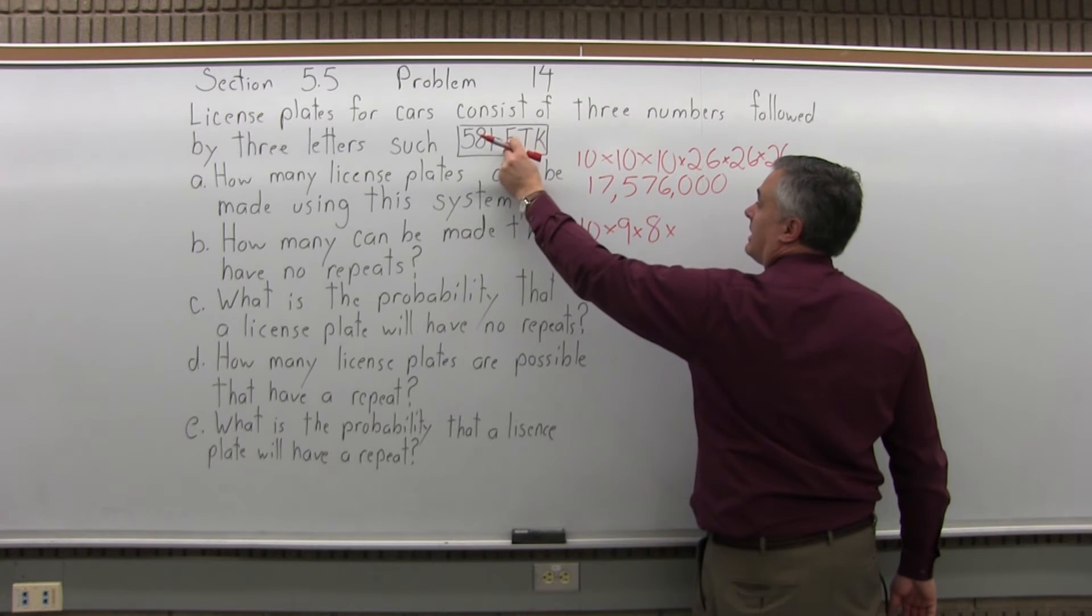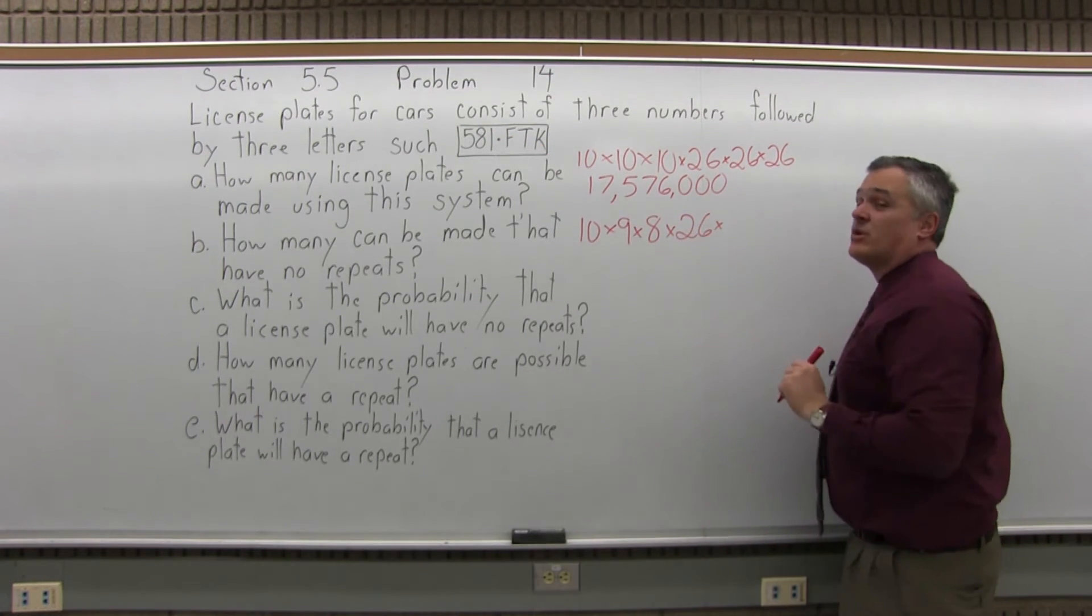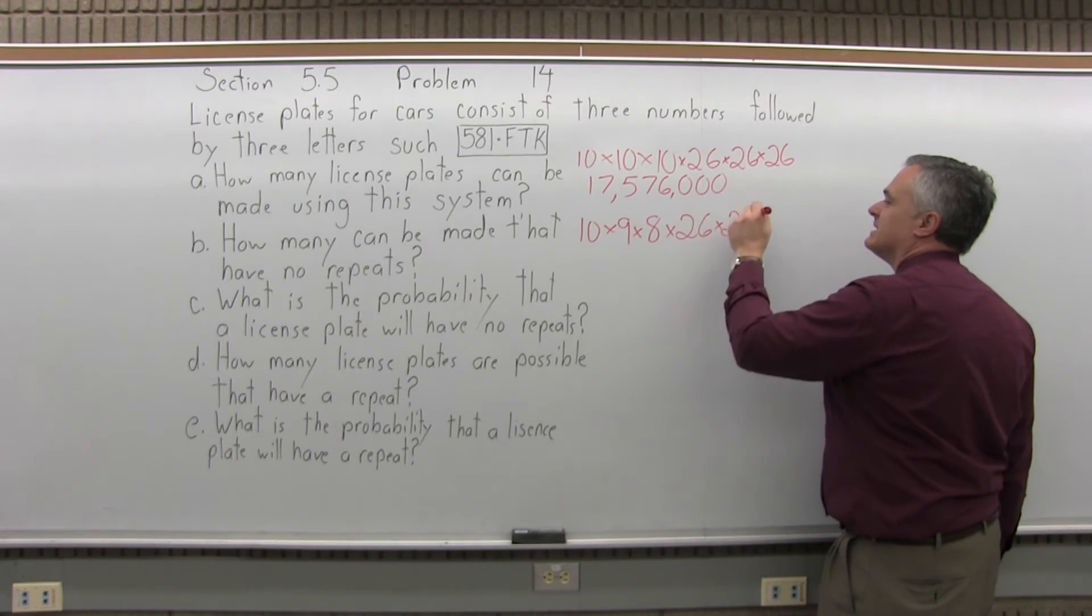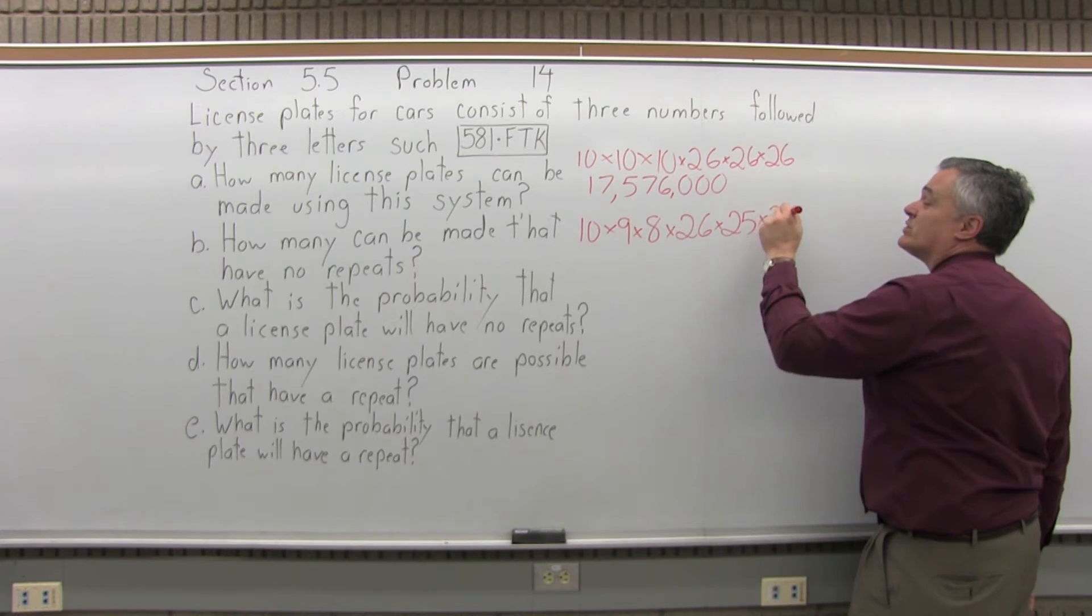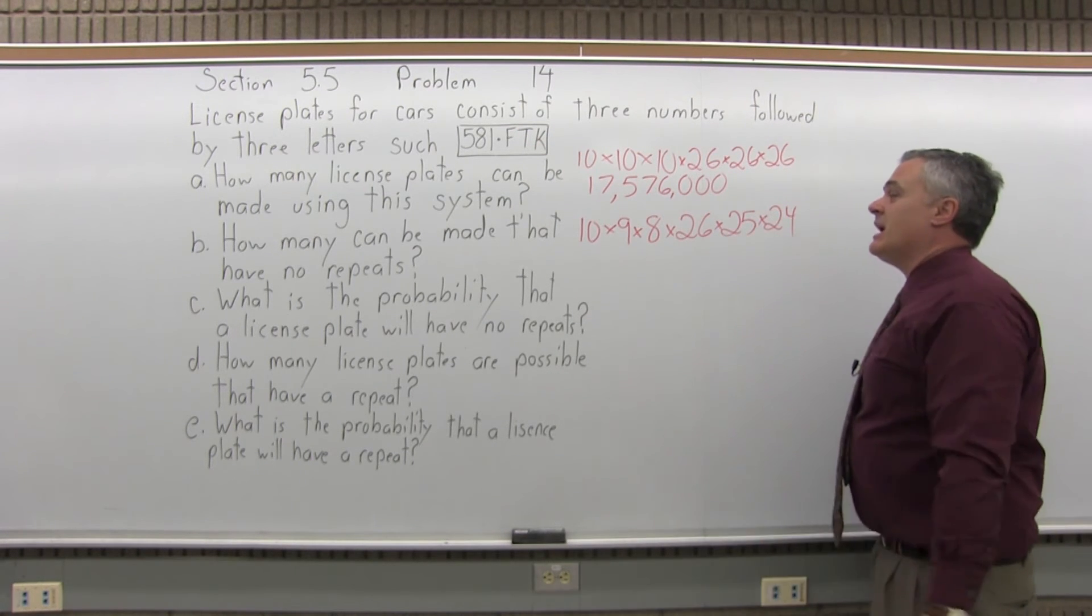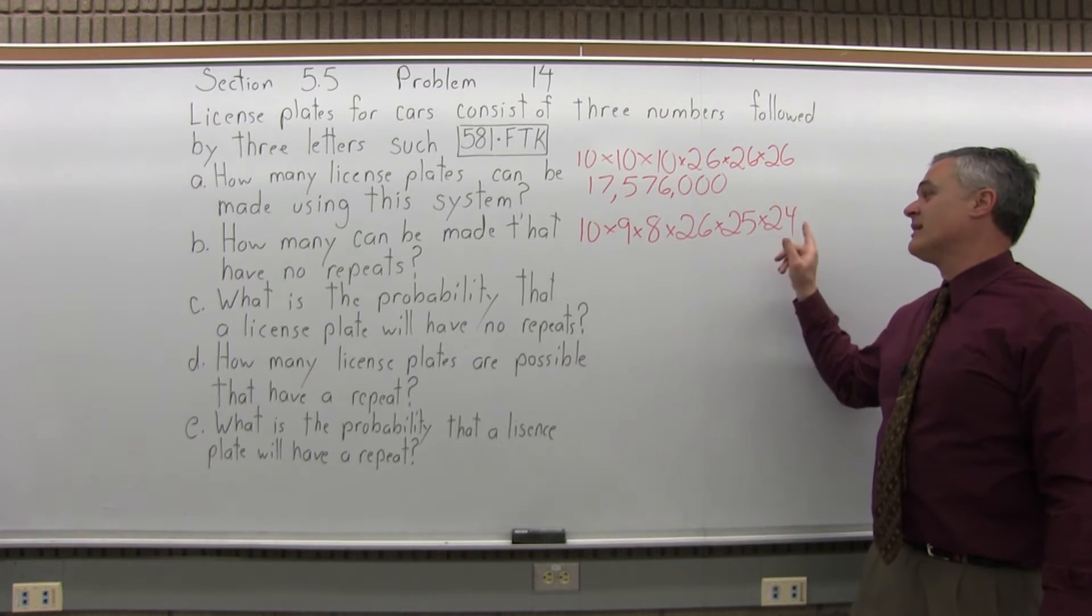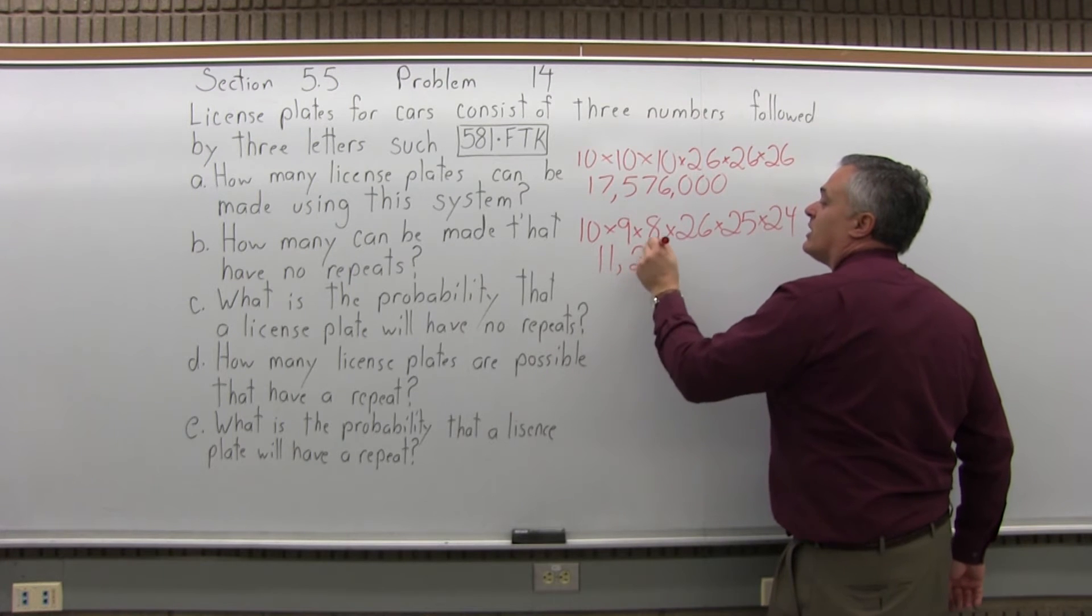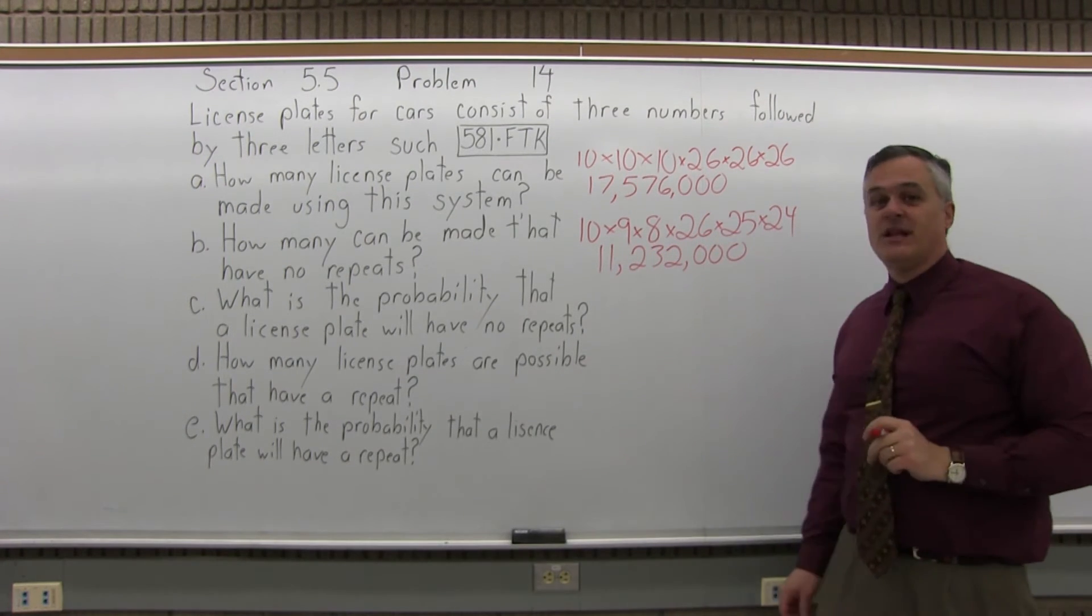When you get into the letters, the first letter, you're going to have 26 choices. But if you have no repeats, the next one, you're down to 25 choices. And for the last position, you'd be down to 24 choices for your last letter. If you multiply that out, ten times nine times eight times 26 times 25 times 24, that multiplies out to 11,232,000 different license plates that can be made that have no repeats.